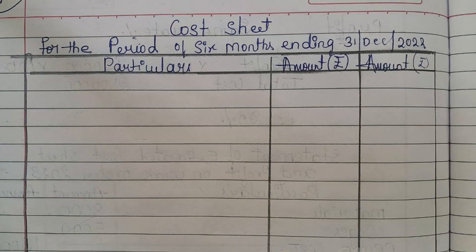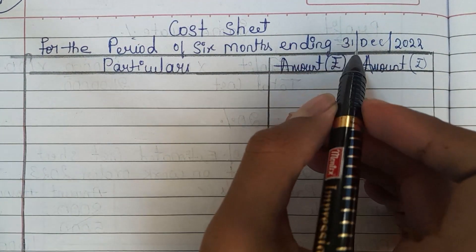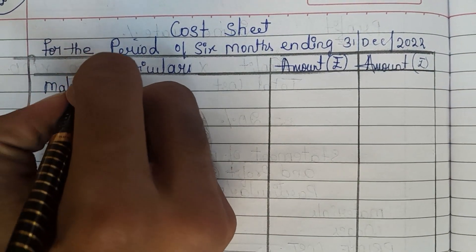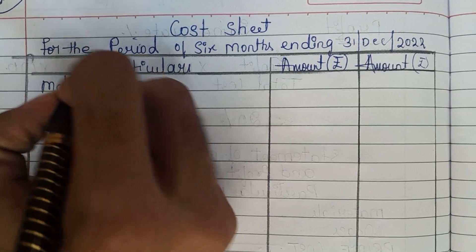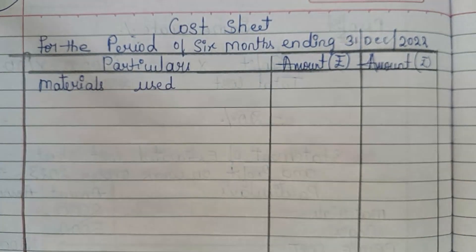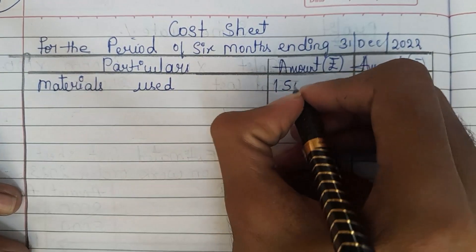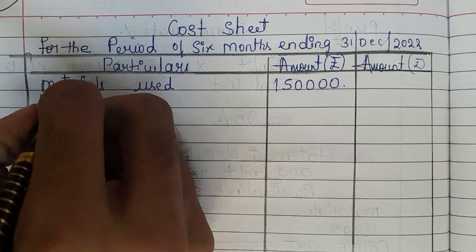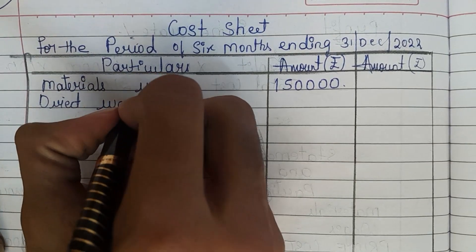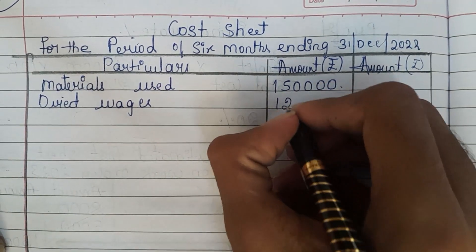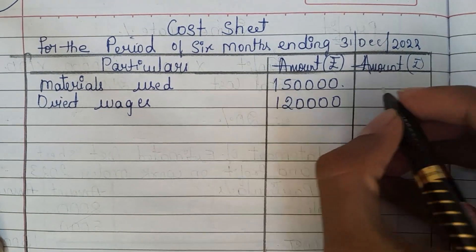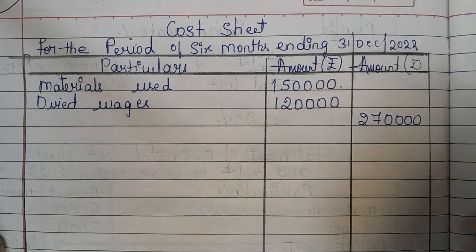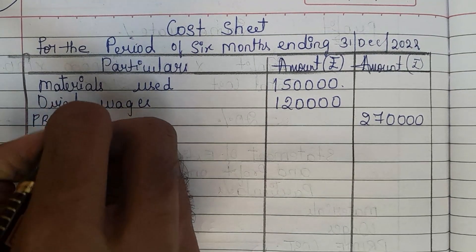This is the cost sheet format for the period of 6 months ending 31st December 2022. We always first need to write direct materials — in this question they have given materials used, which is 1,50,000. Next, direct wages, which is 1,20,000. Now add both of these and you will get 2,70,000.